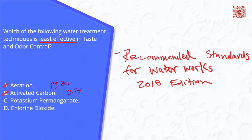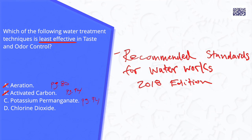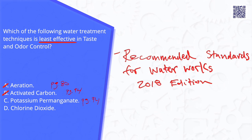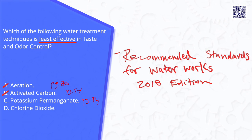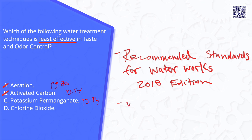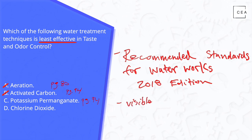When I look up potassium permanganate, I also find it on page 94 of the document. However, it notes that potassium permanganate sometimes leaves visible products of the reaction in the water. I'm going to make a note of that because it stands out to me.